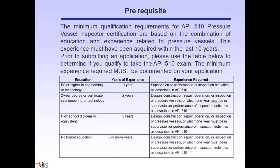The minimum qualification requirement for API 510 pressure vessel inspector certification is based on a combination of education and experience acquired within the last 10 years. A graduate engineer needs one year of experience. A technician, HND, HNC, or assistant engineer needs two years. A high school diploma requires three years, and if you have no formal education, five years of experience is required.